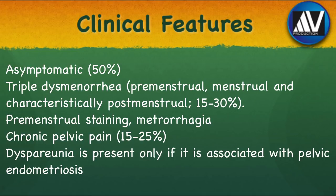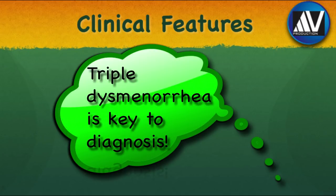Around 50% of women may not have any symptoms, whereas others will have severe debilitating symptoms. Triple dysmenorrhea — that is premenstrual, menstrual, and characteristically postmenstrual dysmenorrhea — is present in 15–30% of cases. Some patients may have premenstrual staining, metrorrhagia, or chronic pelvic pain. Dyspareunia — pain during sexual intercourse — is present only if adenomyosis is associated with endometriosis. Remember, premenstrual, menstrual, and postmenstrual — that is triple dysmenorrhea — is the key to diagnosis of adenomyosis.